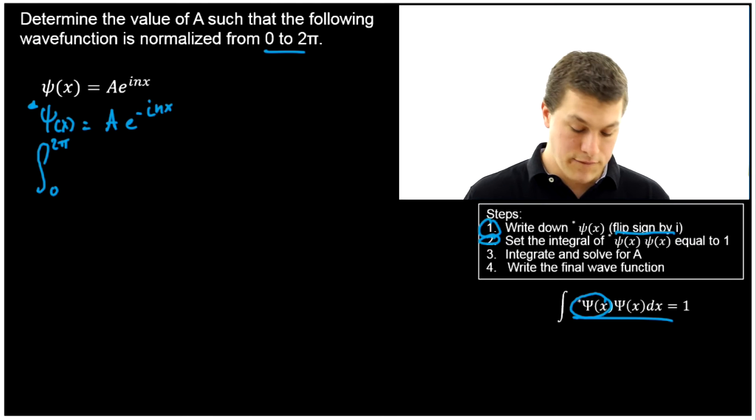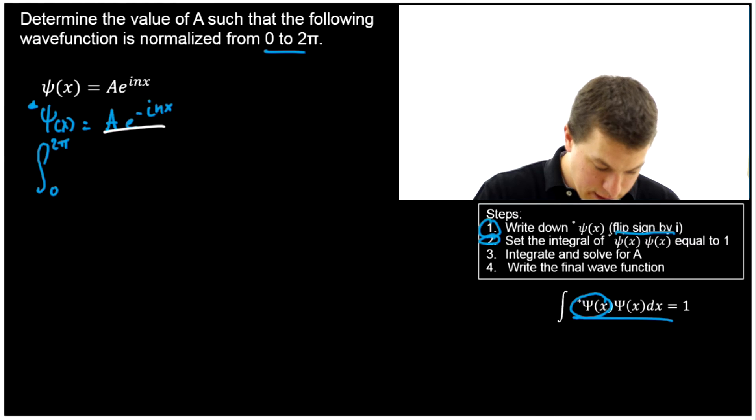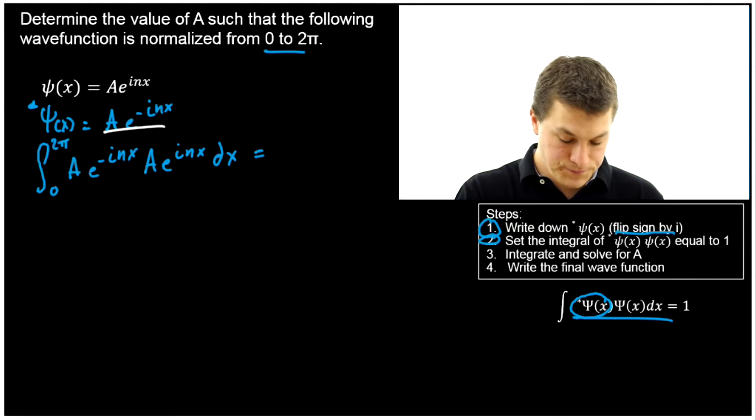Then we're going to write the complex conjugate first as the formula tells us. And that's important later on in quantum mechanics problems. If you screw that up you will get the wrong answer. So make sure that you write the complex conjugate first. Which means we're going to write down this guy first. That's going to give us Ae^(-inx) times our original wave function Ae^(inx). And then add our dx. What's that equal to? One.